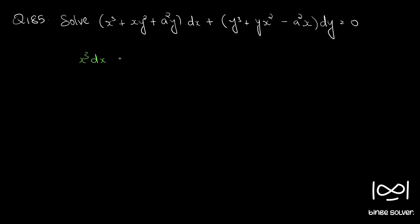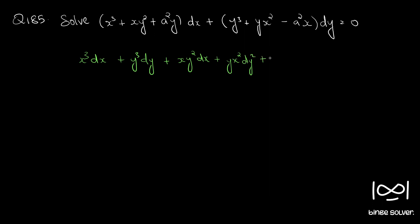x cube dx and y cube dy can be integrated separately. The other terms left are x y square dx plus y x square dy plus a square into y dx minus x dy.